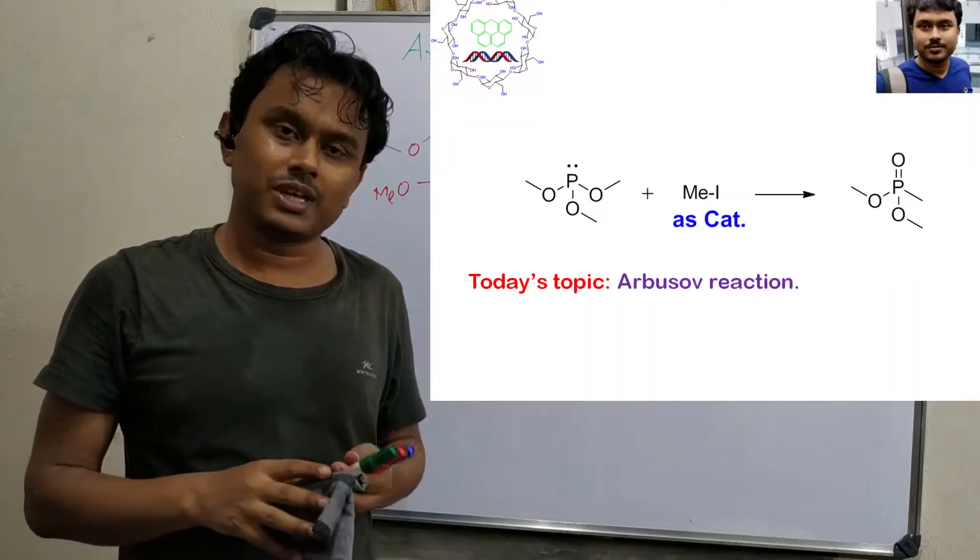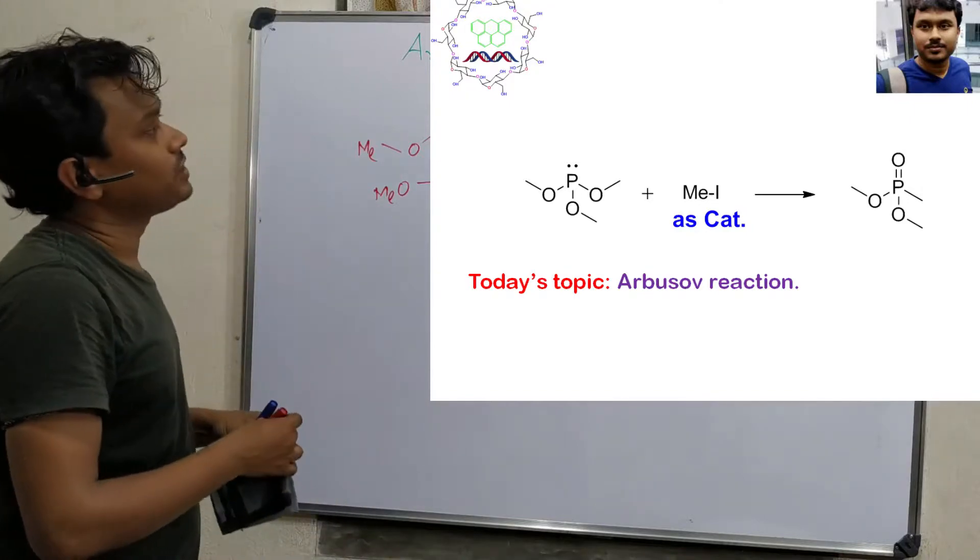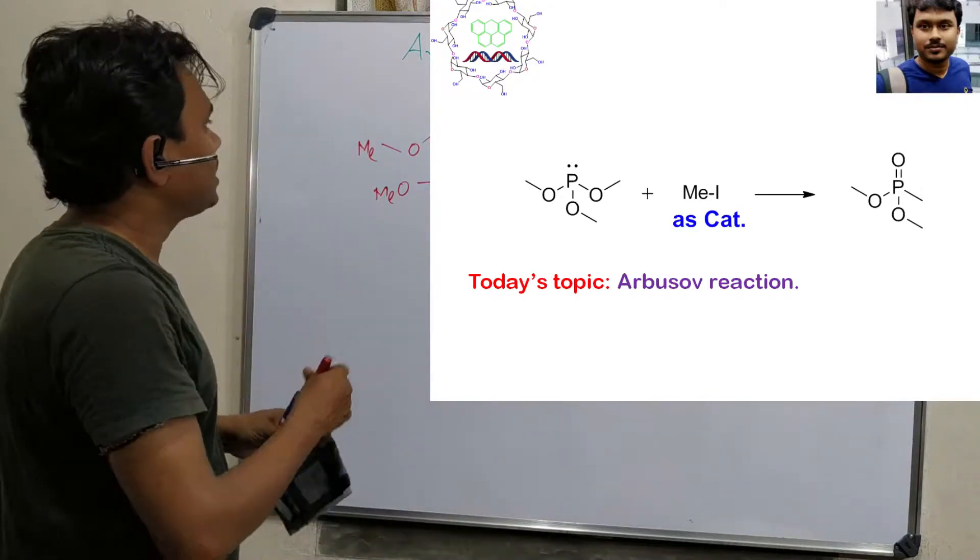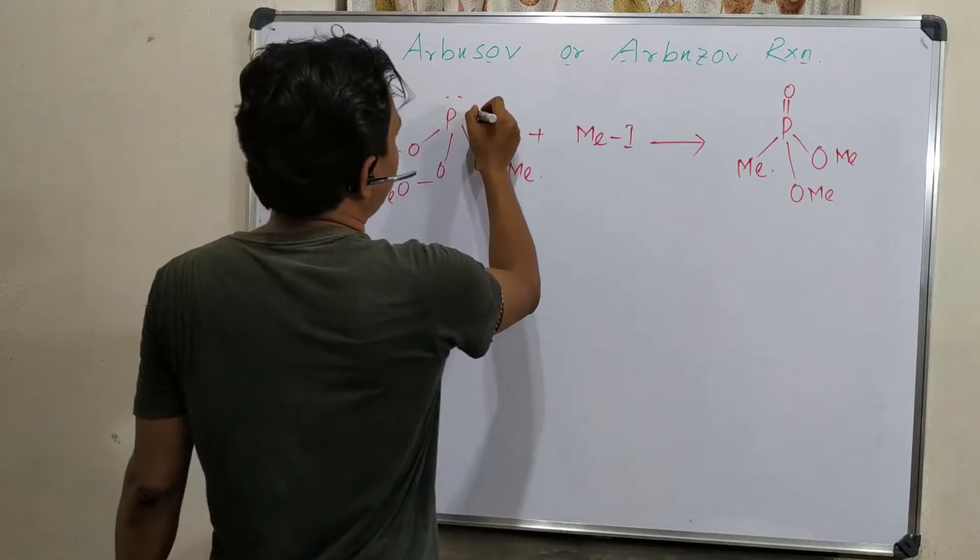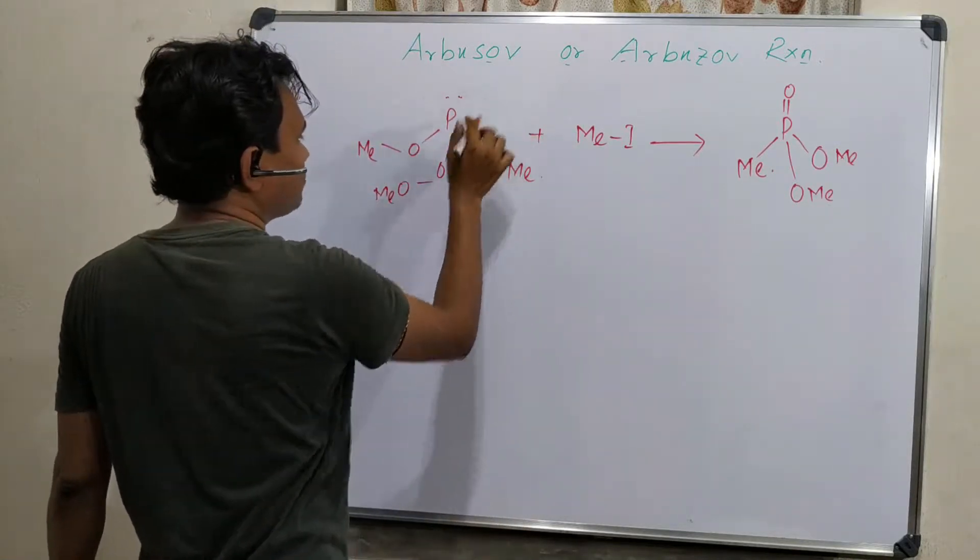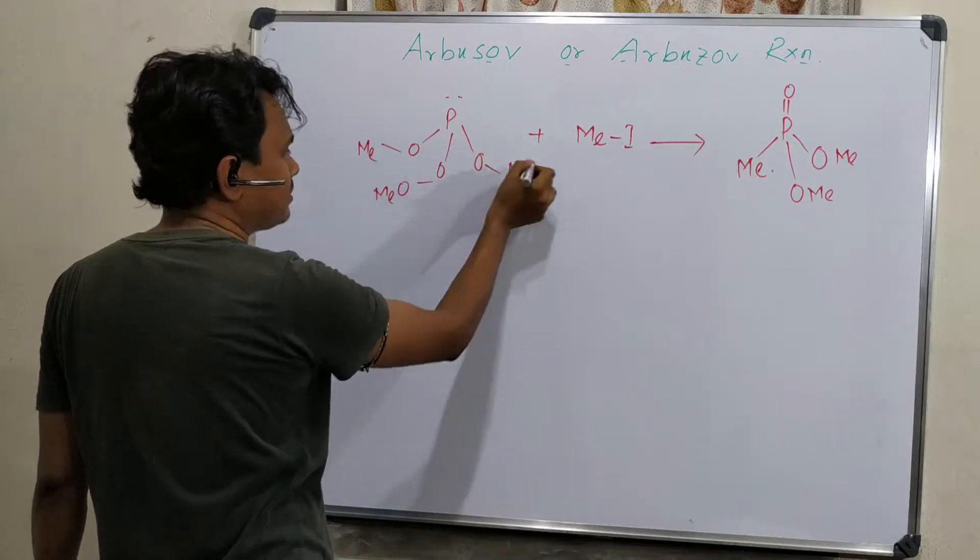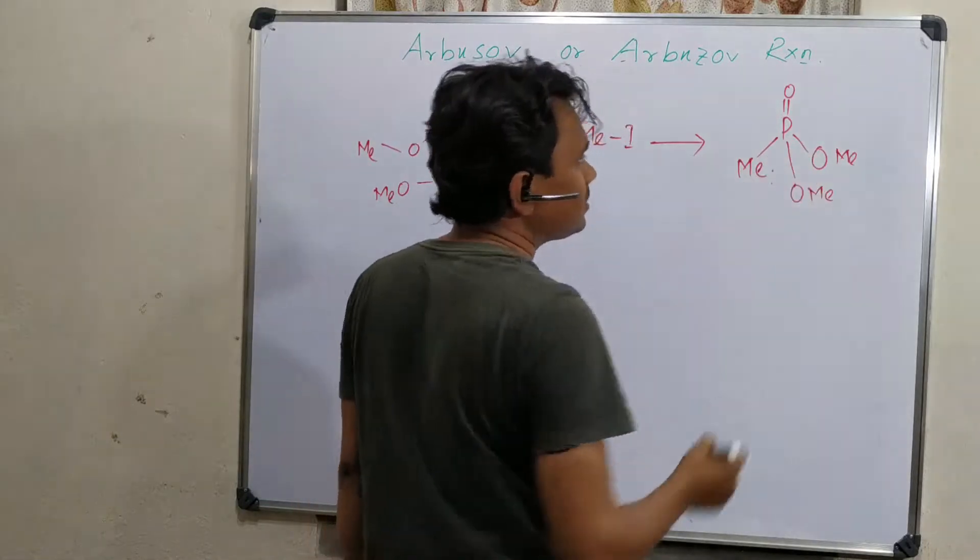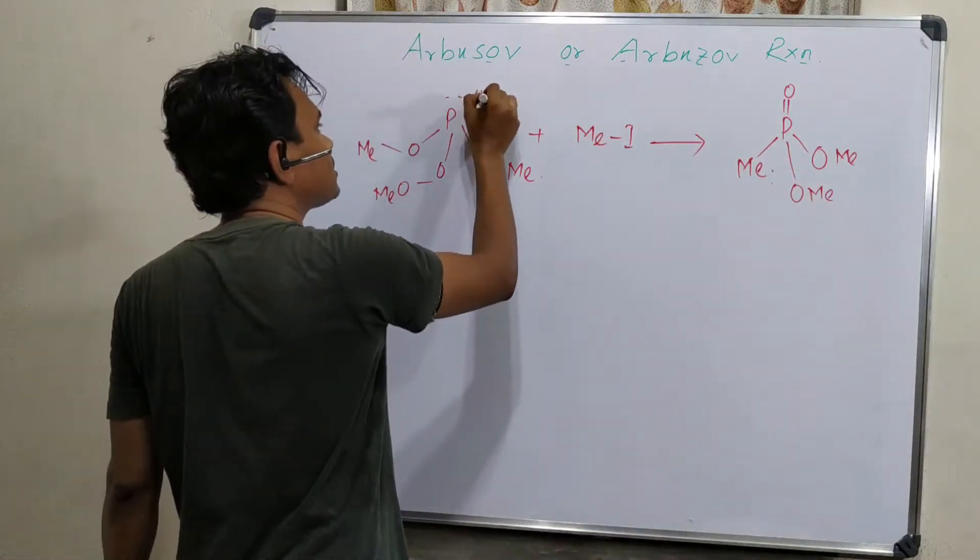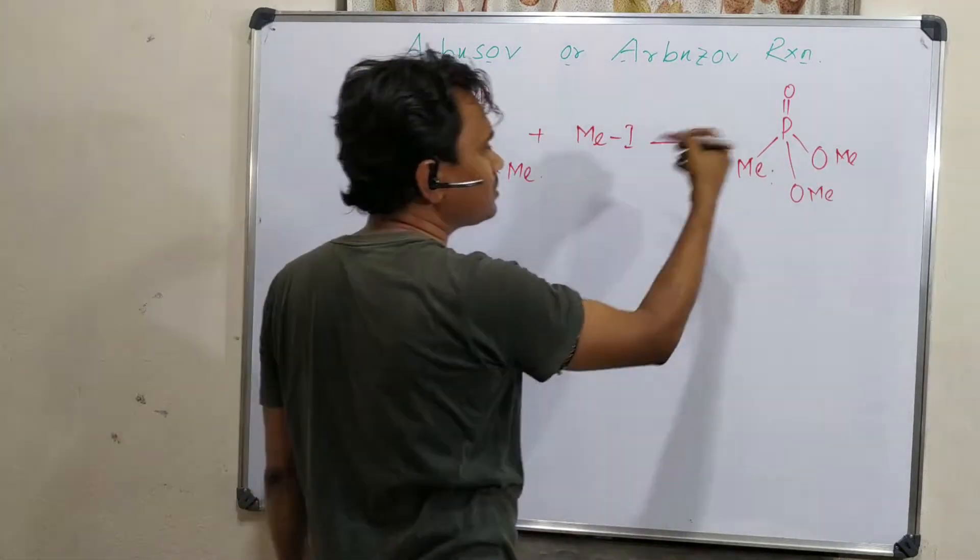It is a very small reaction, the Arbuzov reaction. What this reaction actually deals with is the conversion of a phosphorus ester of phosphorus acid into phosphorus.